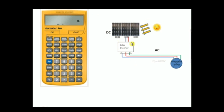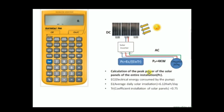Here is the first example: we have the solar panel, the inverter, and the submersible pump. We're going to start the calculation of the peak power of the solar panel. The equation for peak power is: PC (peak power) equals EC (electrical energy) divided by EI (average daily solar irradiation) multiplied by TR (coefficient of installation of solar panel).